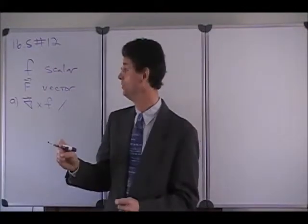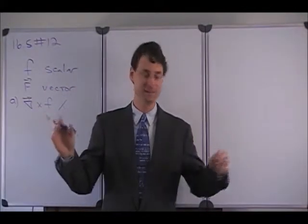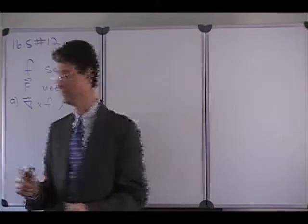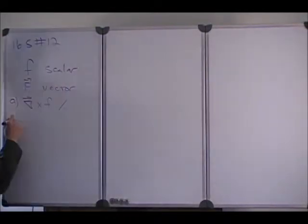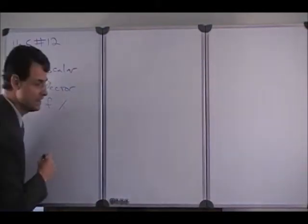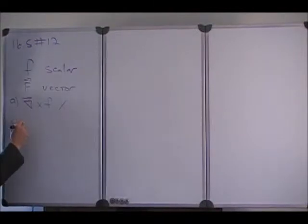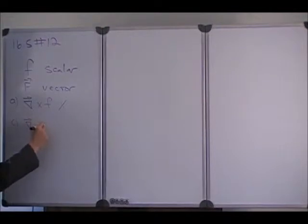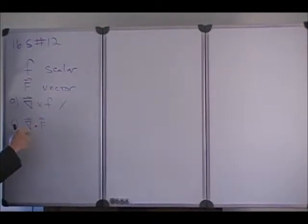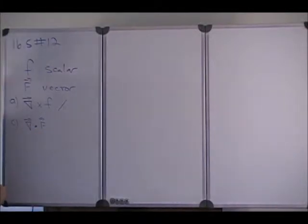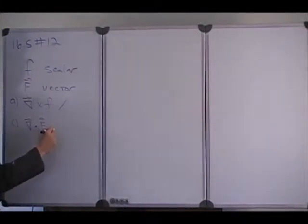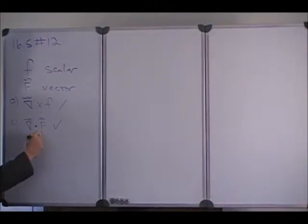I'm going to skip the even-lettered ones and only do the odd-lettered ones. So let's skip B and jump down to C. Part C is the divergence of F. This is del dot F — the dot product between the del operator and the vector field. Yes, this is defined, and when you take a dot product the outcome is a scalar.